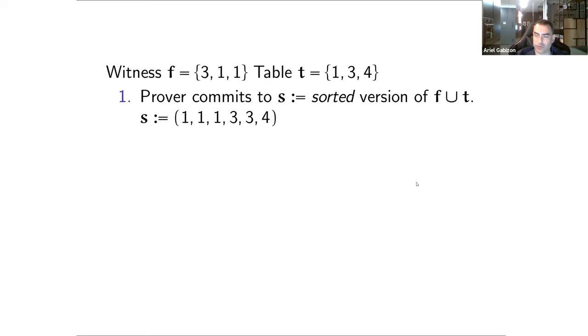The prover will commit to a sorted version of F union T. And here I'm sort of switching between multi-sets and sets here in the multi-set sense. So concretely, if this is F and this is T, then S will be 1, 1, 1, 3, 3, 4. That's the union of F and T sorted with all the repetitions.